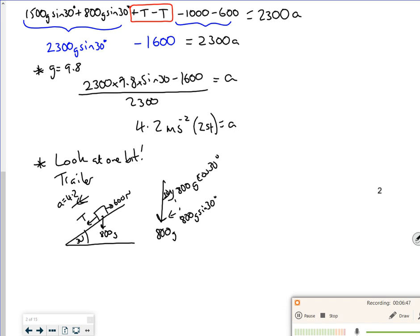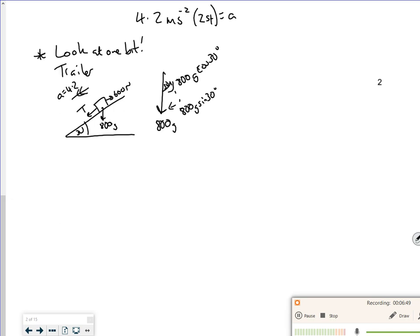Do F equals MA parallel to it again. So parallel. So going down minus resisting is mass times acceleration. So going down is the 800g sine 30 and the tension. Resisting is 600. That's equal to a mass of 800 times by 4.2.